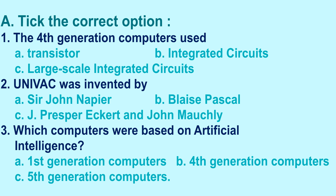Now let's move on to the exercises. Let's begin with tick the correct option. First question: the fourth generation computers used — Option A: transistor, Option B: integrated circuits, Option C: large scale integrated circuits. And the right option is Option C: large scale integrated circuits.